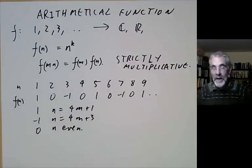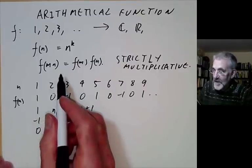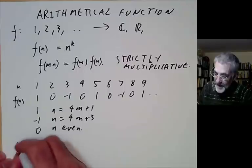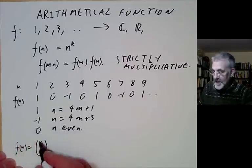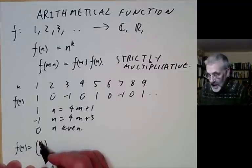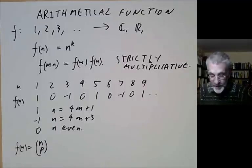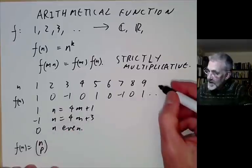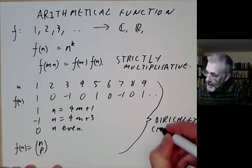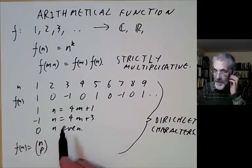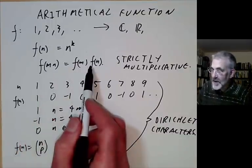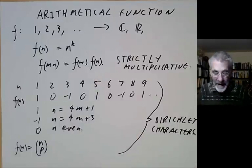Later on we will have some very important examples of strictly multiplicative functions called the Legendre symbol, given by f(n) = (n/p), where this is not a binomial coefficient — it will be something we define later that tells you whether or not n is a square modulo p. This example and the previous one are both examples of things called Dirichlet characters, which will be turning up later in the course.